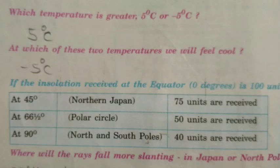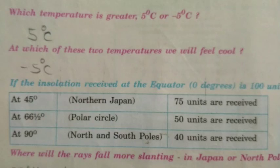Observe this table carefully and answer these questions. Where will the rays fall more slantingly — Japan or the North Pole? The right answer is the North Pole. If the Earth is flat and not curved, which will get more heat — Japan, equator, or both equally? Both equally.